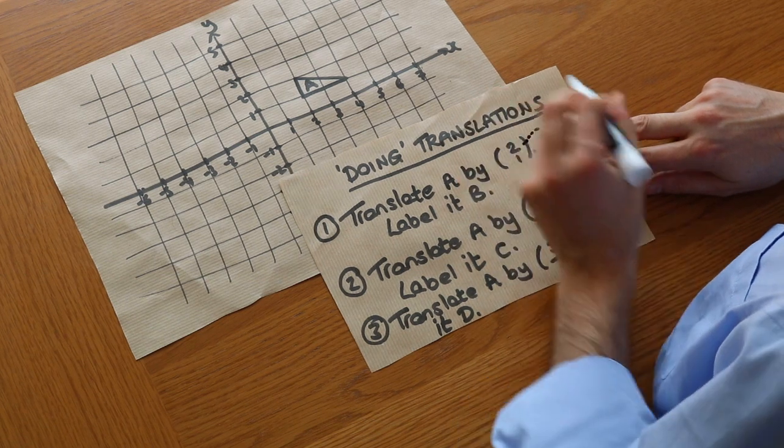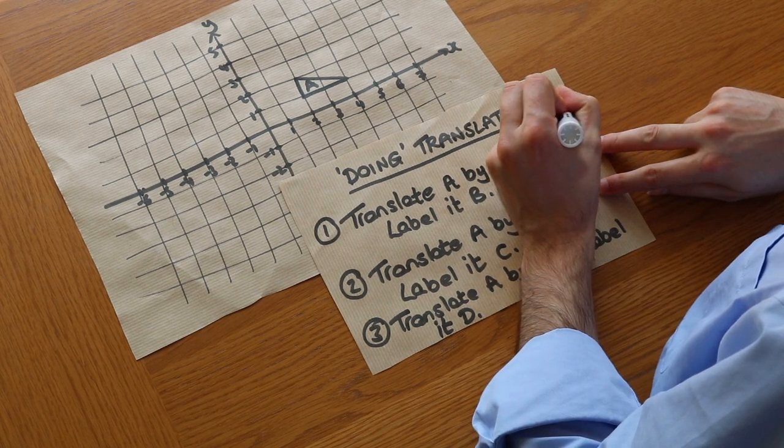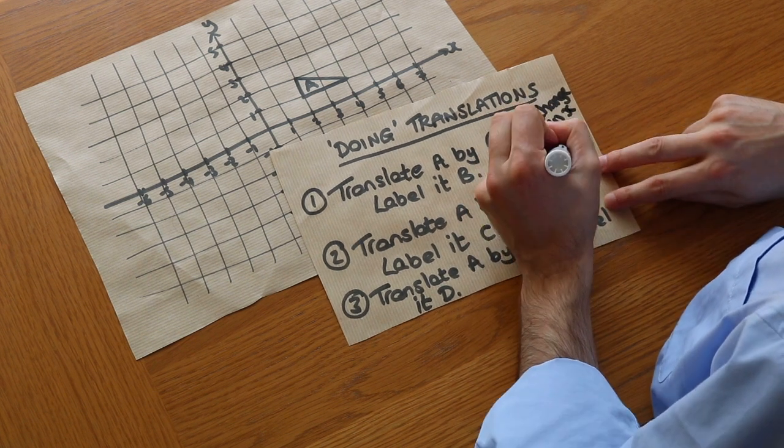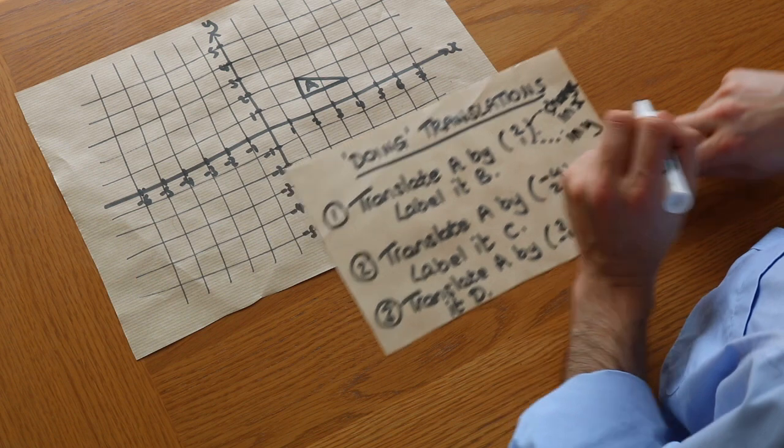So that top number describes the change in the X value of the shape and the bottom number is the change in the Y value of the shape.